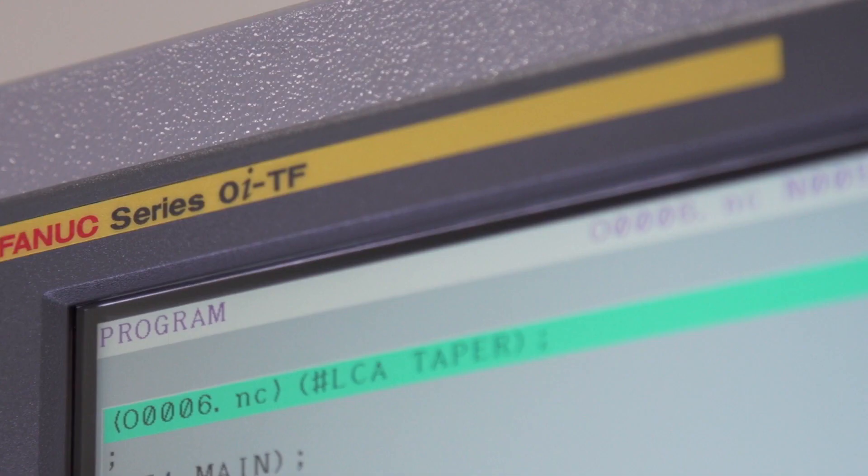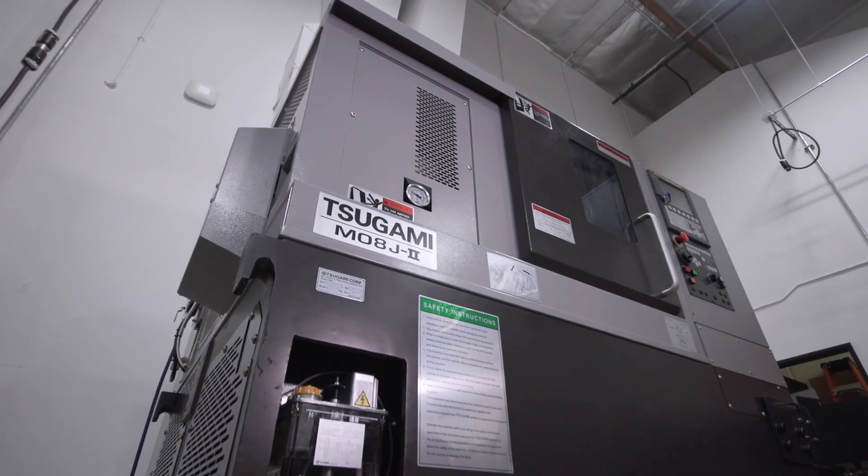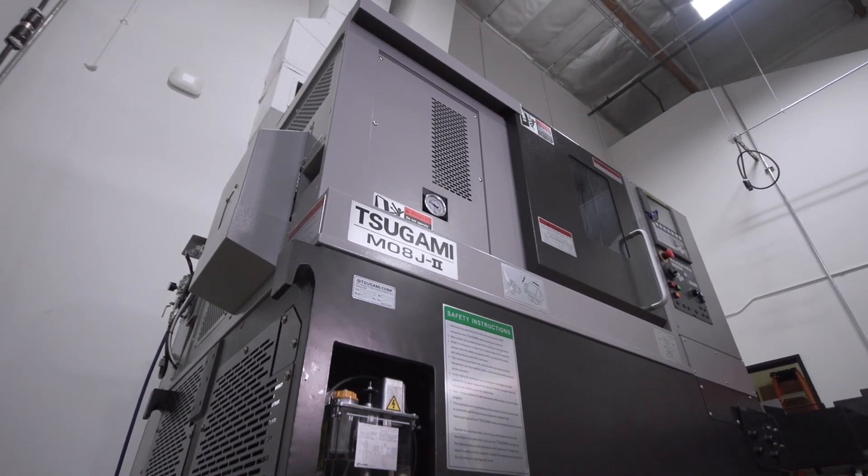So there you have it, the M08J from Tsugami REM Sales. It's compact, rigid, and packed with standard features, all at an affordable price.